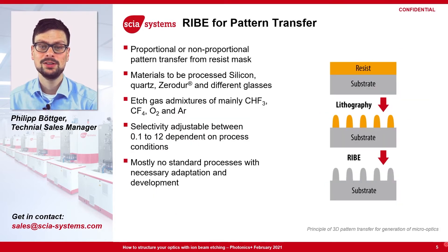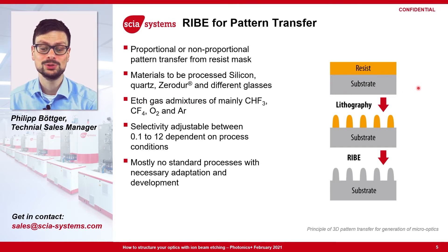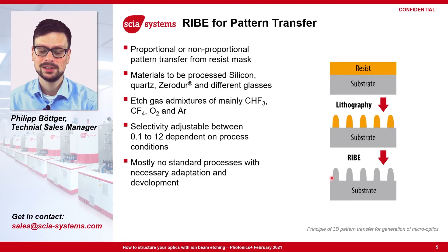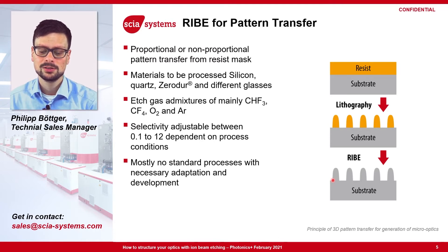A typical application for ion beam etching is pattern transfer. For pattern transfer you need to mask your substrate by either a hard mask or more commonly by a photoresist. This photoresist is then structured by lithography and with ion beam etching we can transfer this pattern into your sample. By choosing appropriate reactive gases it's possible to achieve the same etch rate between resist and substrate, giving you a proportional pattern transfer.